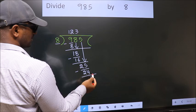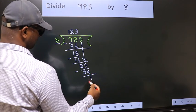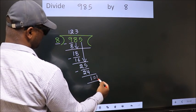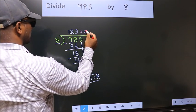No more numbers to bring down. So, we stop here. This is our remainder. This is our quotient.